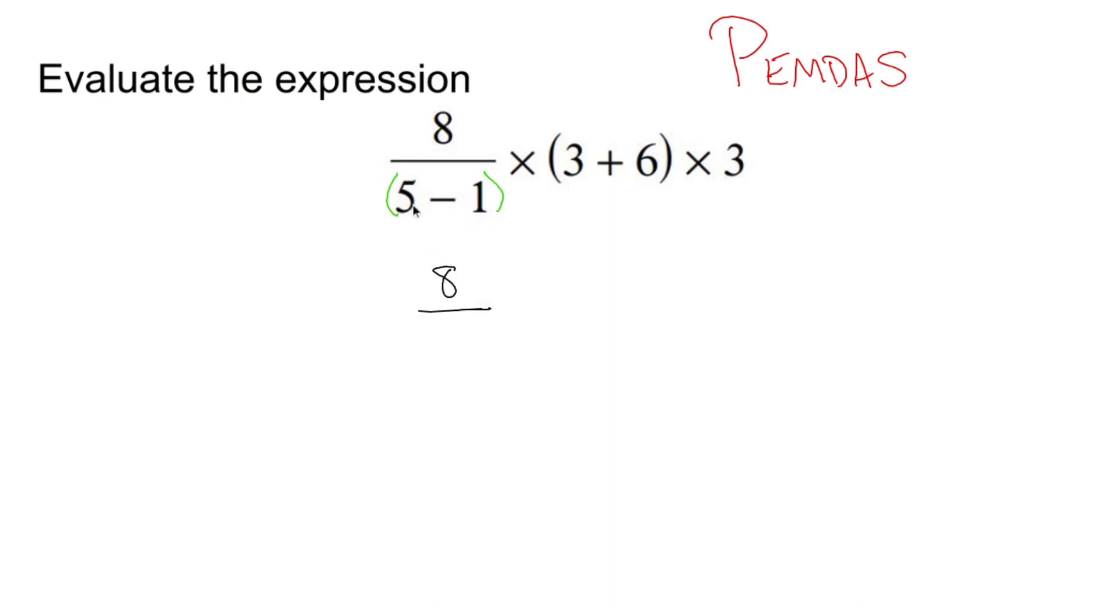Okay. 8 doesn't change. 5 minus 1 becomes 4. Drop down the times symbol. Now I have this parentheses where I can do 3 plus 6, which becomes 9. So I have two sets of parentheses technically. So parentheses, done. Check. Two of them.